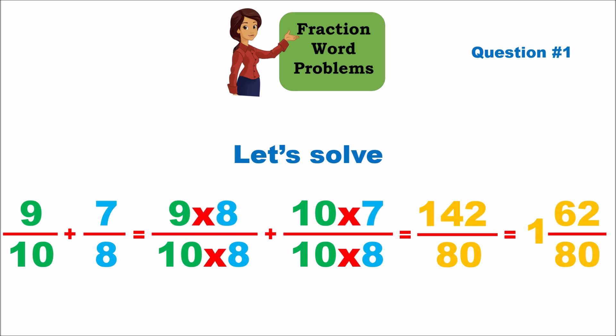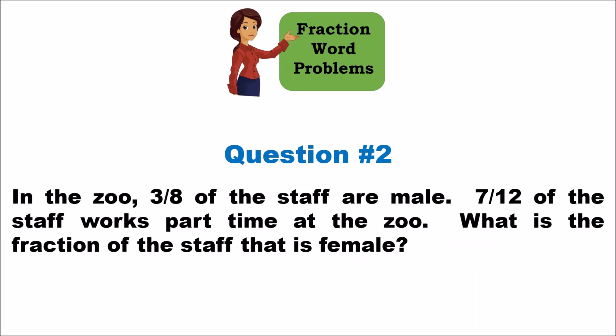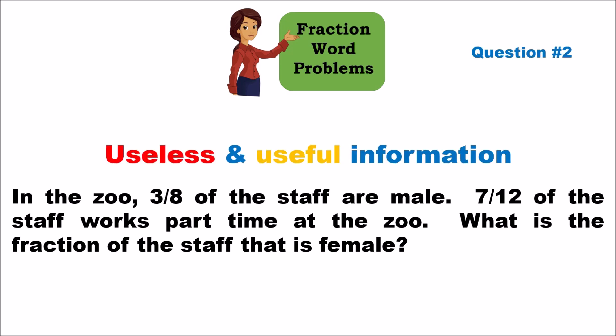Let's go to question number two. In the zoo, three-eighths of the staff is male, and seven-twelfths of the staff work part time. What fraction of the staff is female? Again, we identify useful and useless information. Three-eighths of the staff is male — that's useful. But seven-twelfths work part time — does that have any bearing on gender? No, so that is useless information.